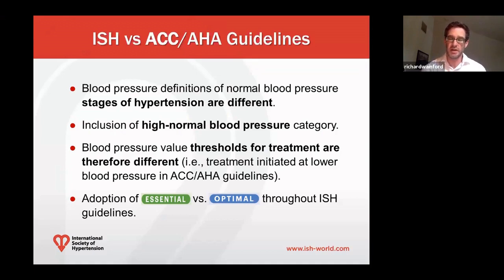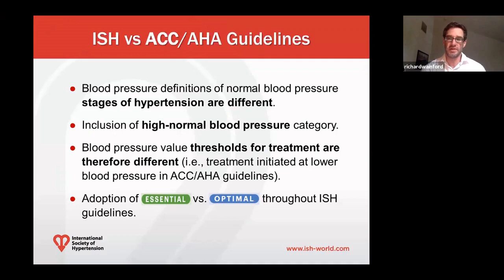In the International Society of Hypertension guidelines, there is the inclusion of a blood pressure category that is not present in the ACC AHA guidelines: the high normal blood pressure category. Additionally, there are different blood pressure threshold values for different stages of hypertension, and this corresponds to different treatment thresholds for hypertension.